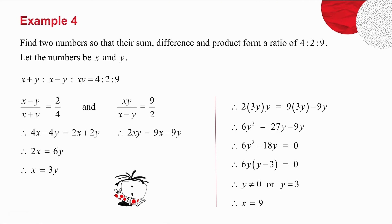I'm going to let the numbers be x and y. The sum is x plus y. The difference is x minus y. The product is x times y. And they must be in a ratio of 4 to 2 to 9. So what I now do is I take these. That over that must equal 2 over 4. So there's one of the ratios.